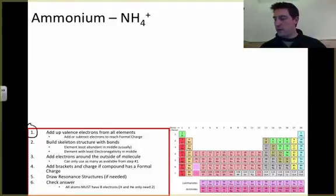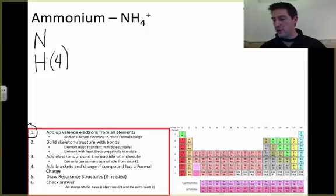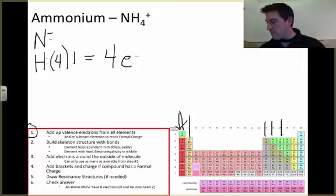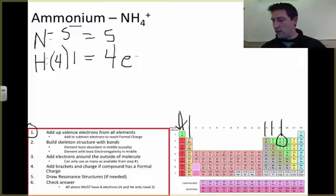So I've got nitrogen and I've got hydrogen, but I've got four hydrogens. If I look at hydrogen right here, it's got one valence electron. Four times one is going to give me four electrons. I find nitrogen, it's over here in the one, two, three, four, five. That means it has five valence electrons.